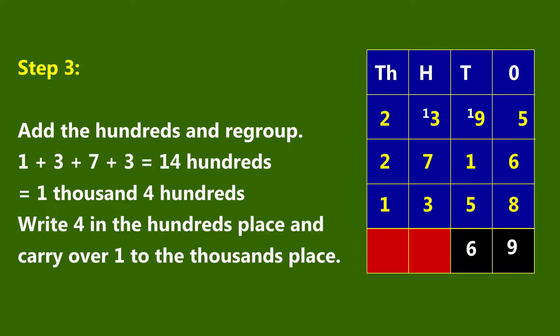Step 3: Add the hundreds and regroup. One plus three plus seven plus three is equal to fourteen hundreds — one thousand, four hundreds. Write four in the hundreds place and carry over one to the thousands place.